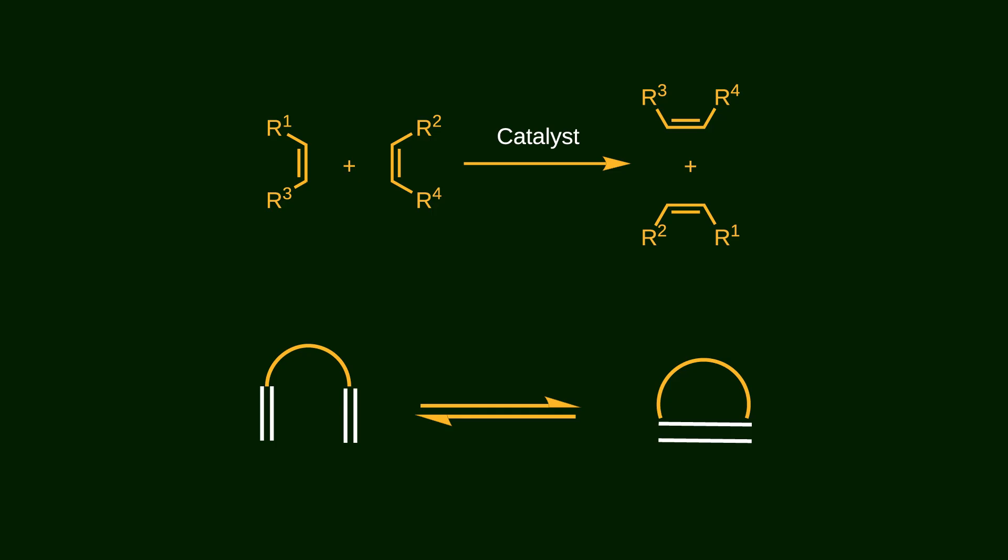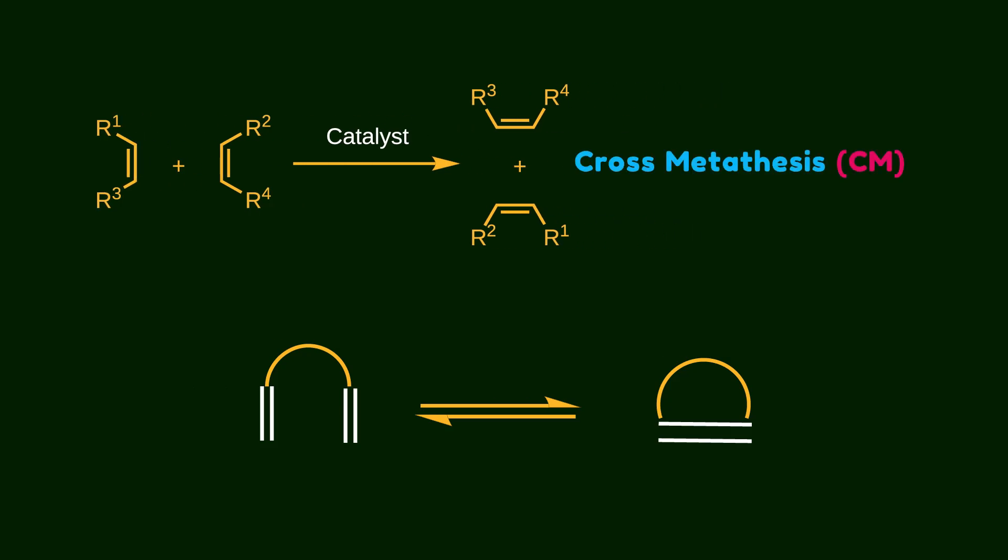There are several types of alkene metathesis. The intermolecular version is called cross-metathesis. The intramolecular version is divided into ring-closing metathesis and ring-opening metathesis.